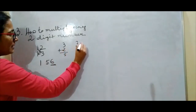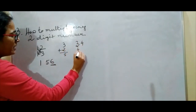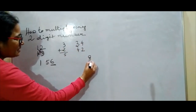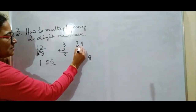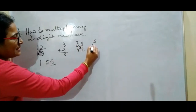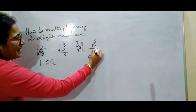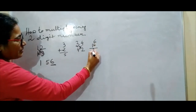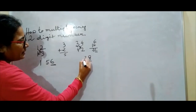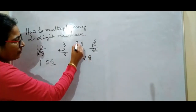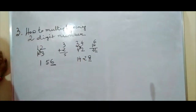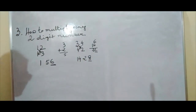Suppose 34 × 42: units digits 4 × 2 = 8. Then cross multiply: 3 × 2 = 6 and 4 × 4 = 16; add these two: 6 + 16 = 22. So 2 goes in the middle and carry 2. Then tens digits: 4 × 3 = 12 plus carry 2 = 14. Answer is 1428.